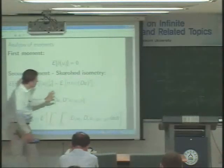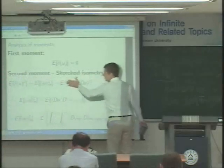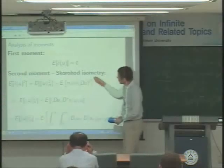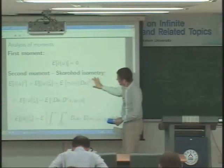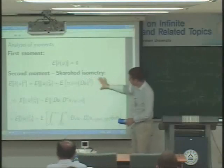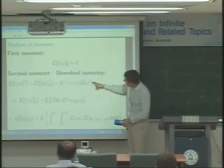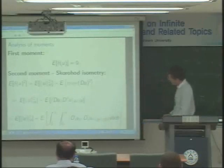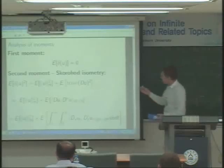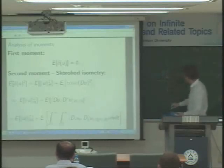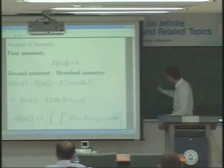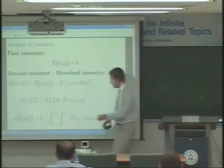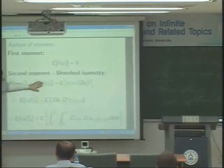Usually we have the Itô isometry, meaning we don't have an extra term. In the anticipating case, we have one additional term which vanishes in the adapted case — this is the Skorokhod isometry. This trace term can be written in at least three different ways. When does delta(u) have the correct second moment? Of course, in case r is an isometry, the norm of u will be deterministic and equal to the norm of the deterministic function f. So when we work with an isometry, the norm of u is a deterministic constant.